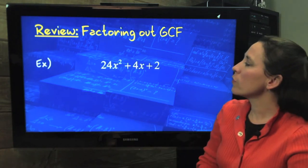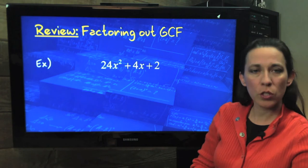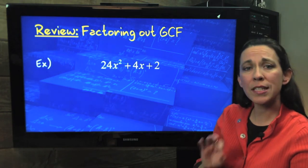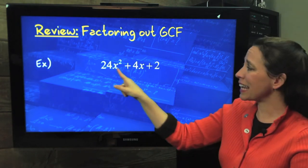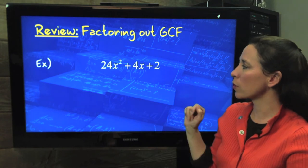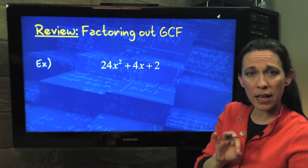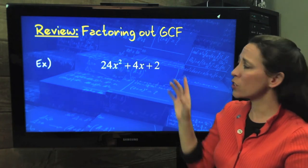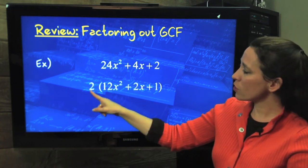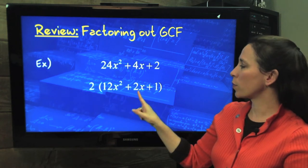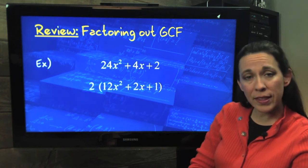Remember if we had 24x² + 4x + 2, you're looking for the largest number and variable that would divide evenly into each of these terms. Well, they don't all have an x, so they're not going to have a variable GCF, but they're all divisible by 2, and that's the largest. So we'd factor out a 2 and we'd be left with 12x² + 2x + 1 in the parentheses.